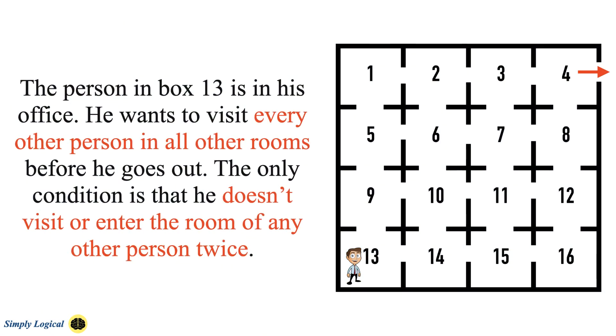In the given figure, the person in box 13 is in his office. He wants to visit every other person in all other rooms before he goes out. The only condition is that he doesn't visit or enter the room of any person twice.